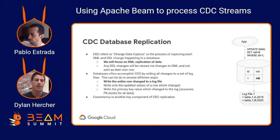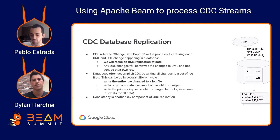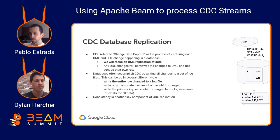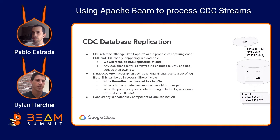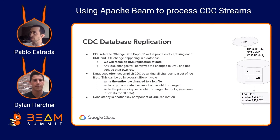For today, we're going to be referring to entire row replication — a database which replicates the entire row for every change into a log file. Other options might be writing just the updated rows or just the primary key that was updated, but for today it'll be the full row. We're also going to touch on consistency, which is another key component of CDC replication, both on the source and on the target.